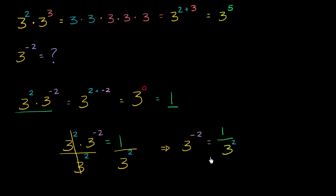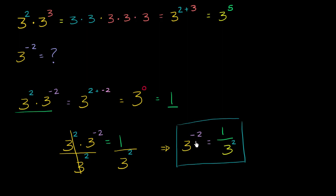I really want you to internalize this. You have something to the negative two power — that's equal to one over three to the positive version of that exponent. And this is true in general. In the next video, we'll use a very similar argument to prove this for any non-zero base and any exponent: if you raise it to a negative exponent, it should be one over that base raised to the positive version of that exponent. So three to the negative two power is one over three squared, which is equal to one over nine.